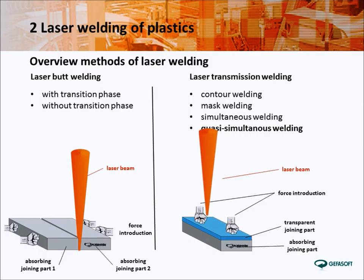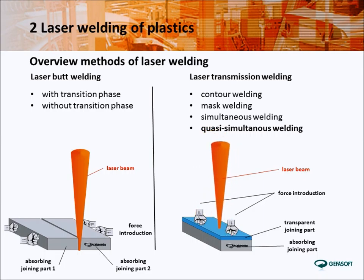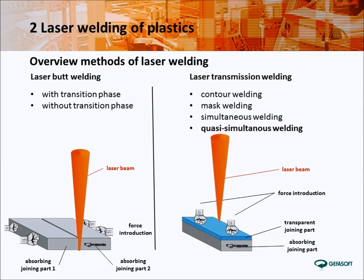The leading process is the laser transmission welding, in which the product consists of a transparent and an absorbing joint partner. A percentage of the laser energy passes the transparent joint partner and finally couples into the absorbing partner completely. This kind of process can be divided again into contour welding, mask welding, simultaneous welding, and quasi-simultaneous welding, as shown in the following slides.